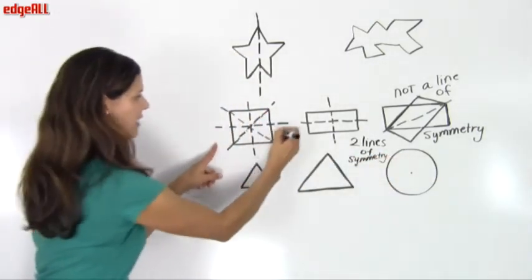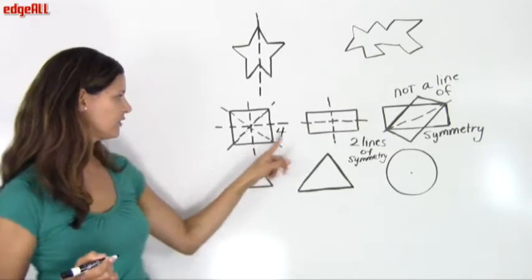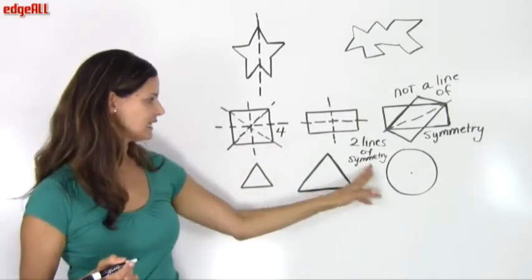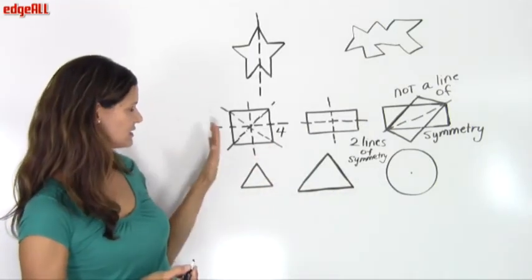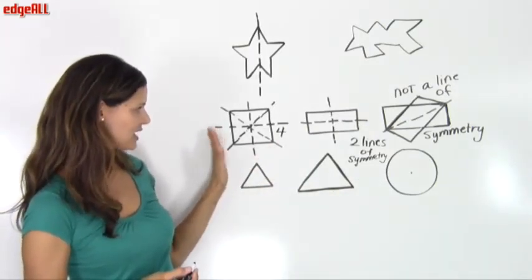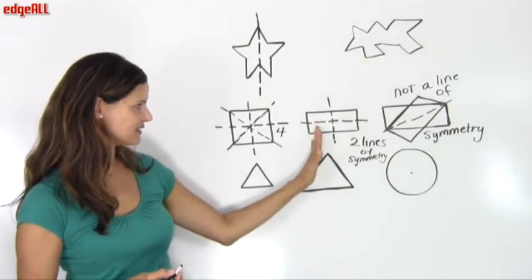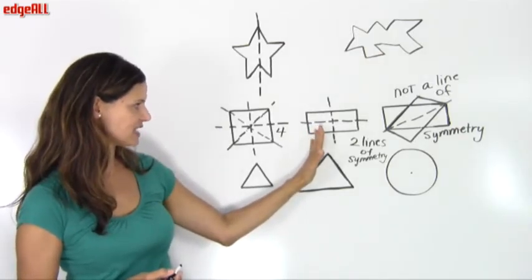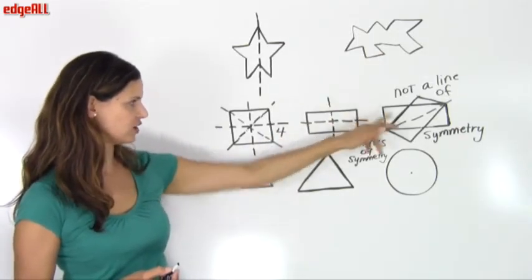So with a rectangle we have only two lines of symmetry — a vertical line and a horizontal line — but not the diagonals. Our rectangle only has two lines of symmetry, whereas our square had four.